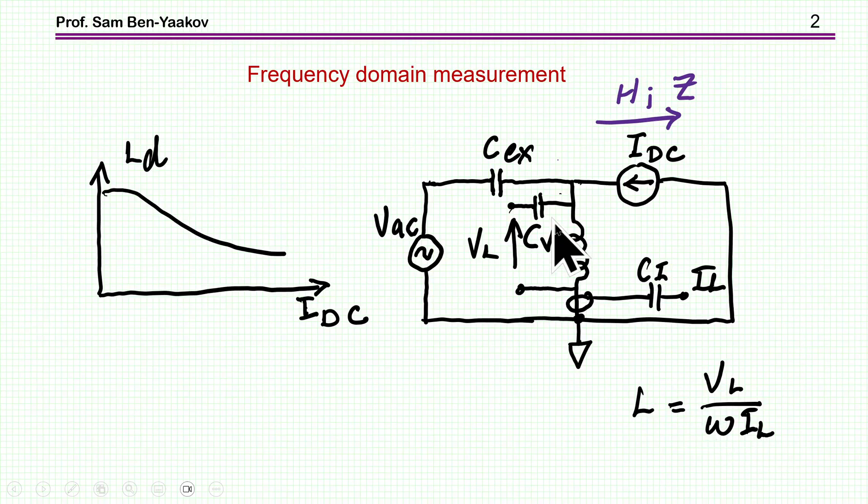This is the current, the AC current through the inductor. Now this is not simple to implement because you need a current source, and in some inductors it's going to be a very high current.